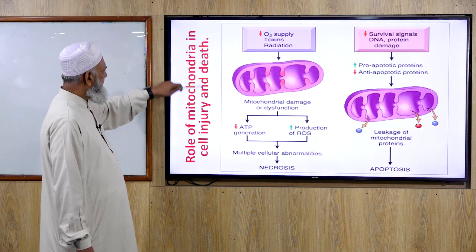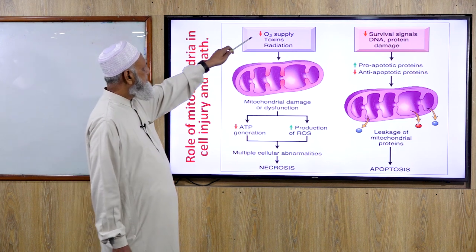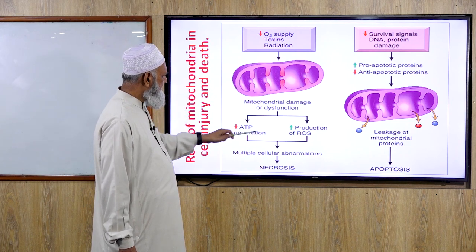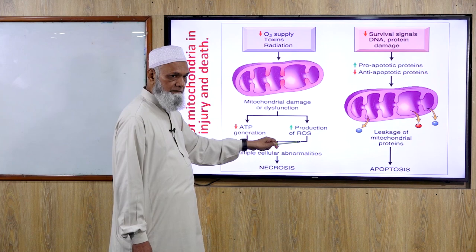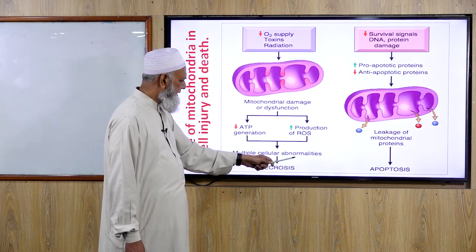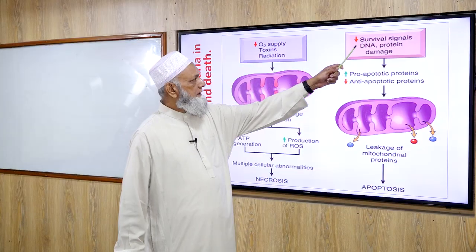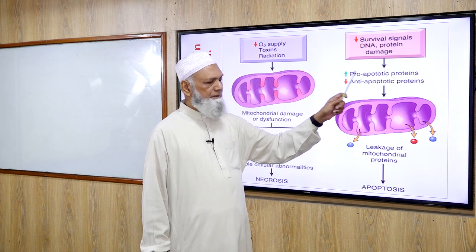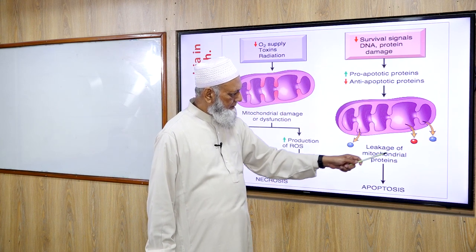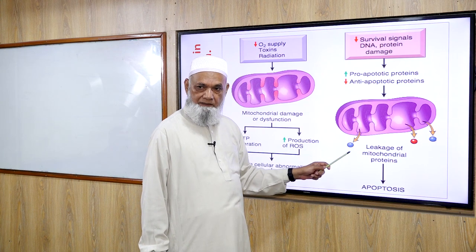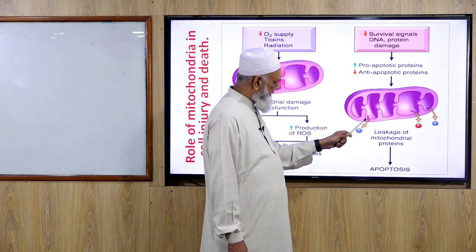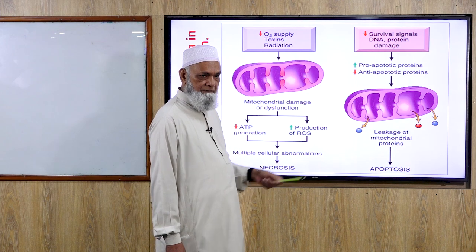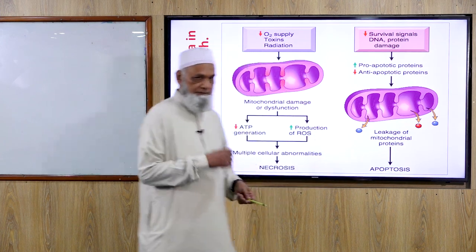Role of mitochondria in cell injury and death: decreased oxygen supply, toxins, and radiation cause mitochondrial damage. Mitochondrial damage or dysfunction causes decreased ATP generation and increased production of reactive oxygen species, leading to multiple cellular abnormalities and cell necrosis. Decreased survival signals, increased pro-apoptotic proteins, and decreased anti-apoptotic proteins lead to leakage of mitochondrial proteins, formation of high-conductance channels, exit of cytochrome C, and ultimately apoptosis.